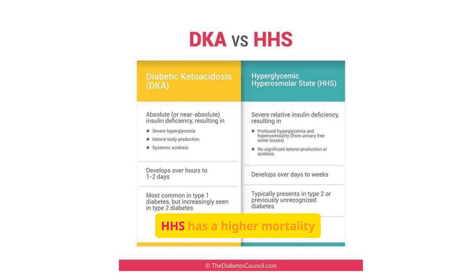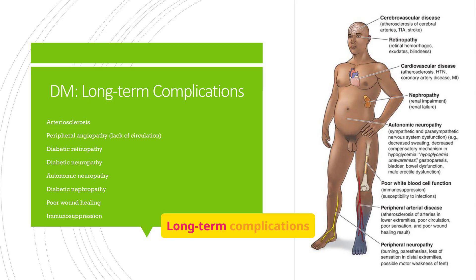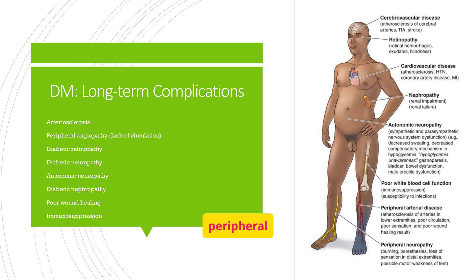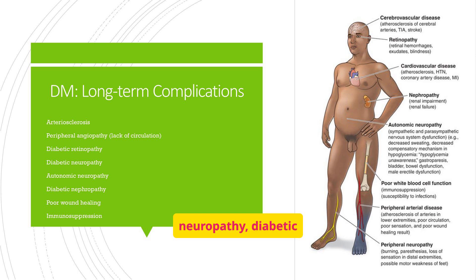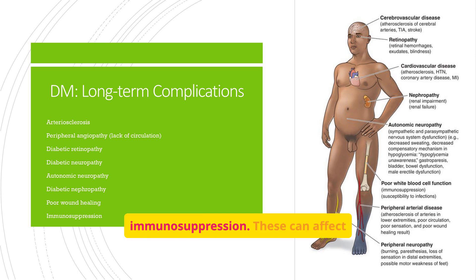Long-term complications of diabetes include arteriosclerosis, peripheral angiopathy, diabetic retinopathy, diabetic neuropathy, diabetic nephropathy, poor wound healing, and immunosuppression. These can affect various organs and systems throughout the body.